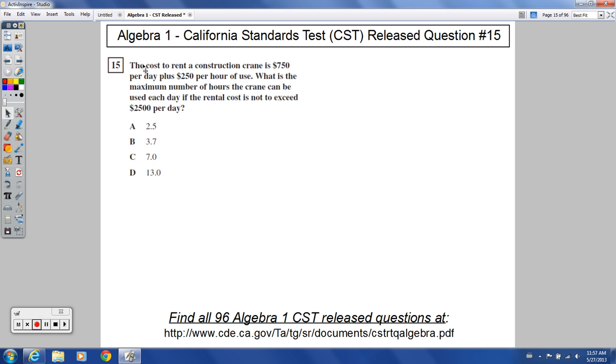Number 15 says the cost to rent a construction crane is $750 per day plus $250 per hour of use. That is pricey. You better be knowing what you're doing. You're going to get charged $250 an hour to use this construction crane.